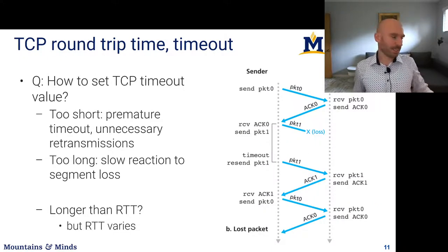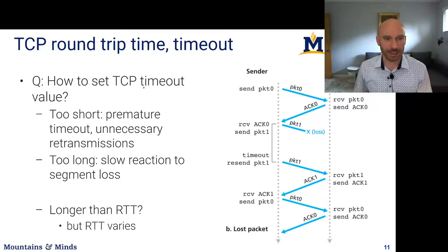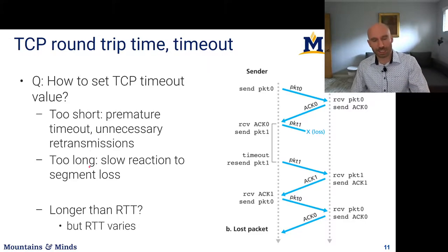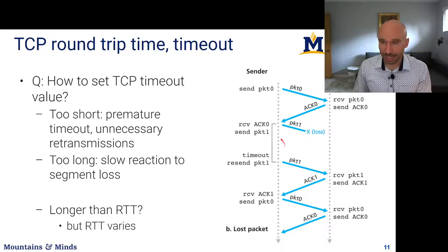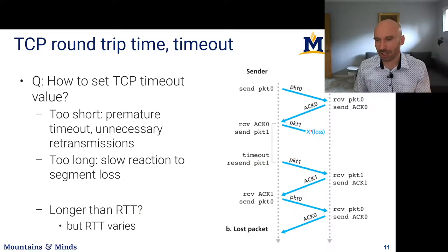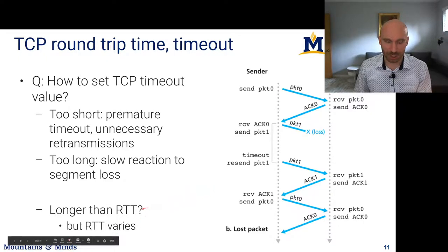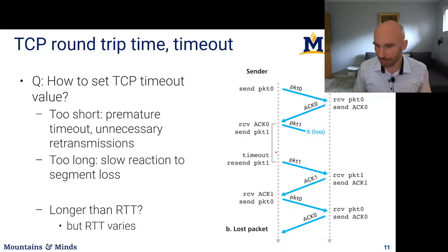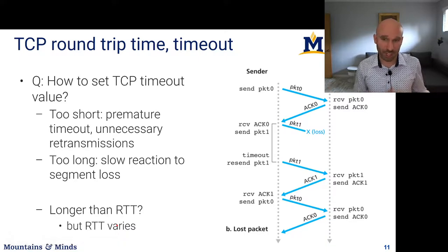Another issue: how long should the sender wait before retransmitting — how to set the TCP timeout value. If it's too short we prematurely retransmit; if too long we wait unnecessarily. The timeout should be longer than the round-trip time, since we need to allow the packet to arrive and the ACK to return before retransmitting. But round-trip time varies over time due to congestion, so what do we do?